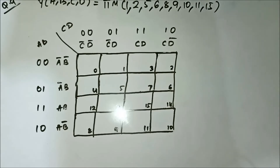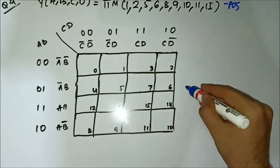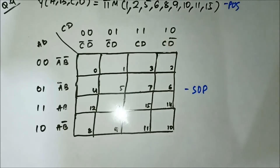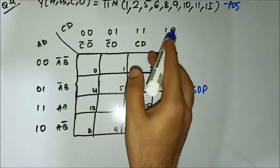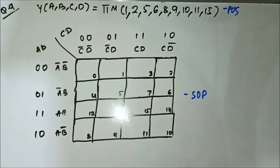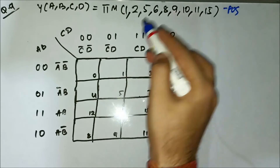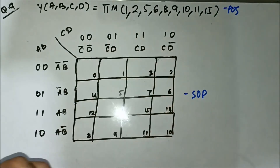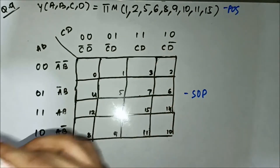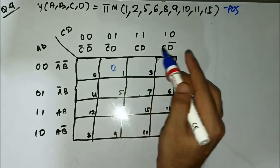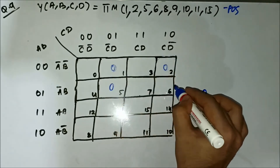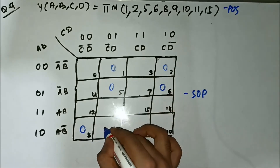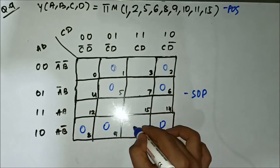This is the 9th question related to simplification of POS expressions using SOP K-map. Here we have the expression given in terms of the max term values, and we have the format of the SOP K-map. We'll map these values onto the K-map — the values are 1, 2, 5, 6, 8, 9, 10, 11, 15.